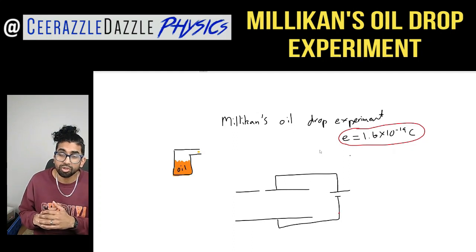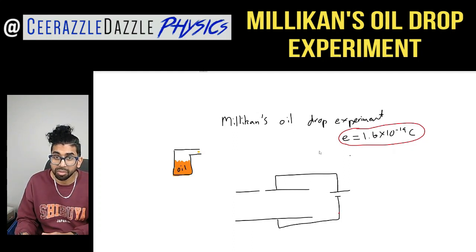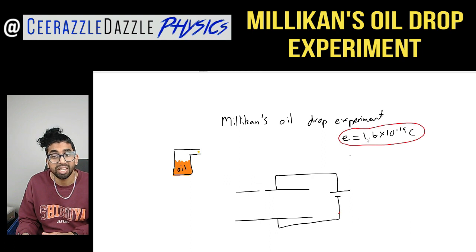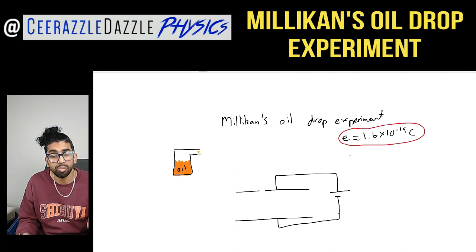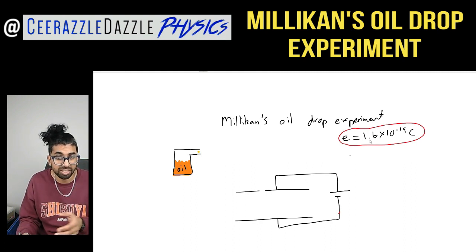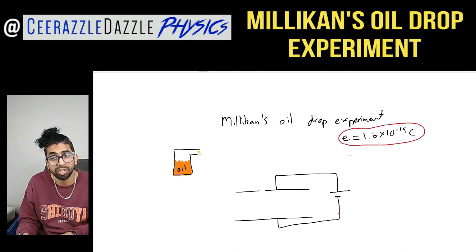Milliken's oil drop experiment is really important because it led us to the charge of the electron being 1.6 × 10⁻¹⁹ coulombs. You may have come across that previously, but now we're going to do an experiment which actually validates that the electron charge is 1.6 × 10⁻¹⁹ coulombs.